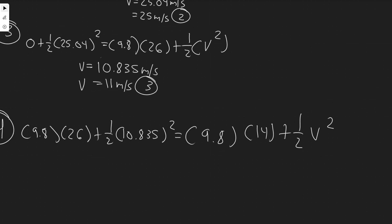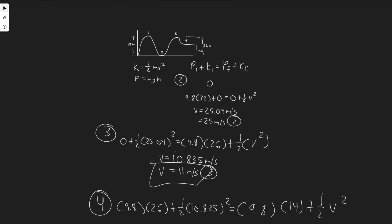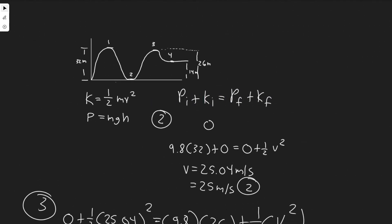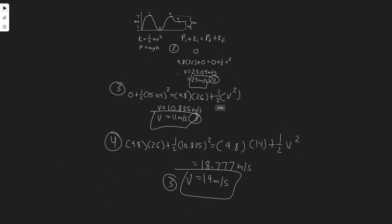So we just got to solve for V again. So we're going to have 9.8 times 26 plus 0.5 times 10.835 squared, and then minus 9.8 times 14, multiply by 2, square root. So you should get about 18.777 repeating. I'm just going to round it to 19. So about 19 meters per second. That's going to be the speed at the fourth point. So all you did was use kinetic and potential energy to solve this and use this formula. Basically conservation of energy, the initial equals the final. So these are going to be the answers: 25, 11, and 19. Hopefully you found this useful.